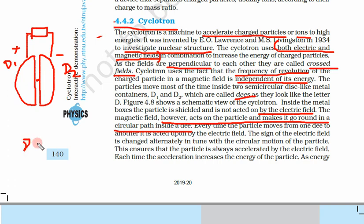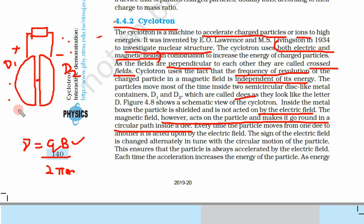The frequency of the particle is known because we know the formula qB/2πm. We have applied a uniform magnetic field coming out of the paper, so we know the magnetic field and therefore the frequency of the particle. Now the particle starts moving.